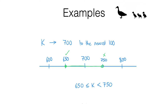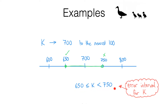What we've done here is actually the point of this video. We have written what's called the error interval for k. This is just a way of showing you what possible values k could have had given this kind of information.